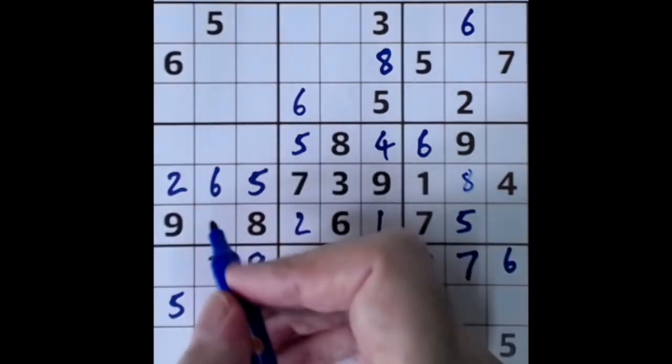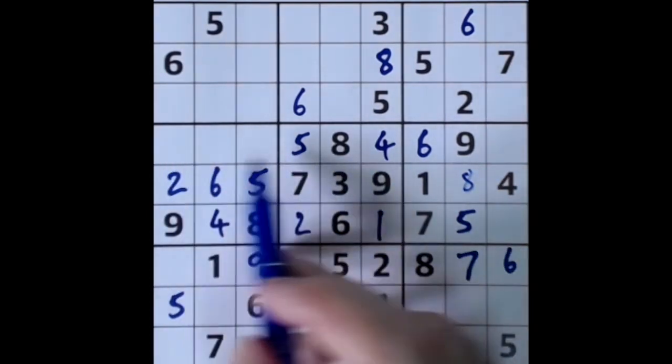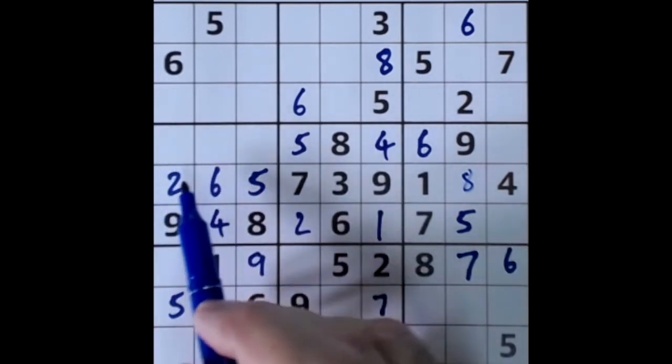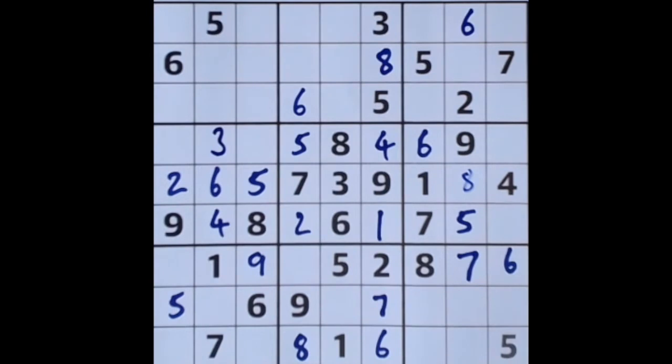Now 4 blocks across this row giving us a 4 there. Now if you remember I said 1 and 7 are in these two squares here. So we don't have a 3 anywhere, so the 3's got to go there. 3 blocks this square here, so that's a 3. The missing number here is a 2.